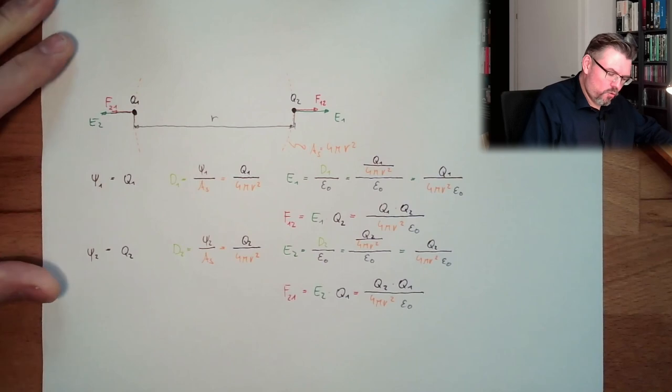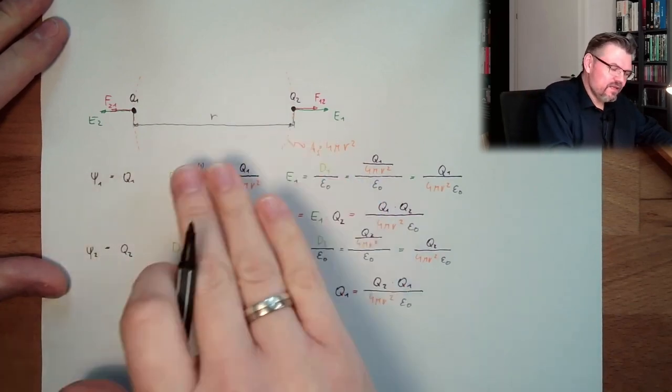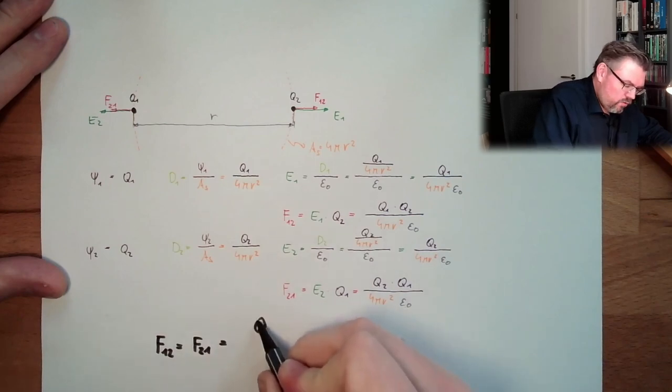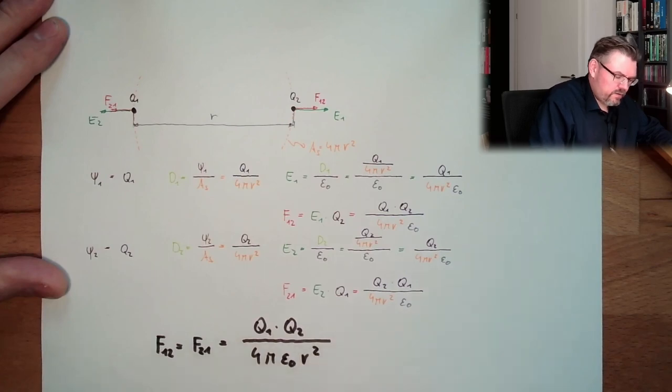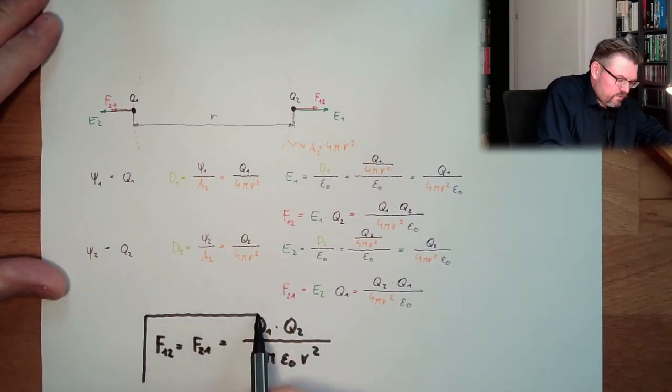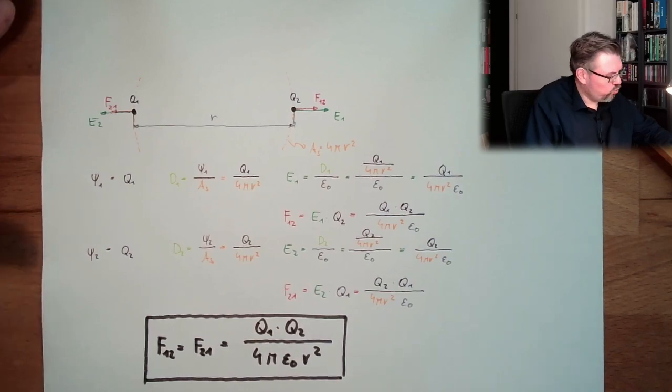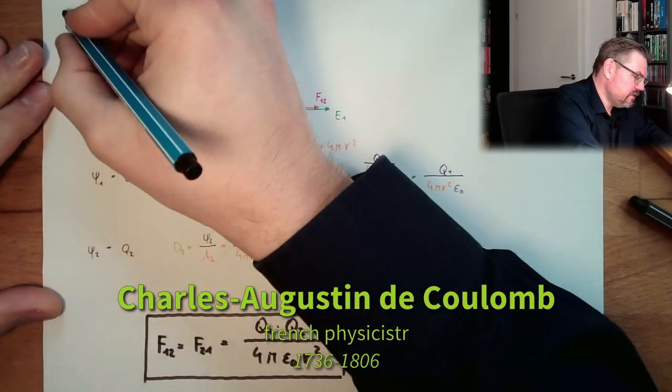So actually, we are calculating the forces of two point-shaped charges to each other in a distance of R. F12 equals F21. And this equals Q1 multiplied by Q2 divided by 4 pi epsilon 0 r squared. R is the distance. This is our finding. And this was first found out by somebody called Coulomb. Now we are finally at Mr. Coulomb. This is why we call this nowadays Coulomb's law.